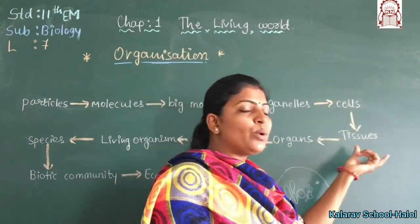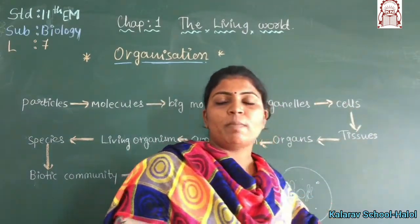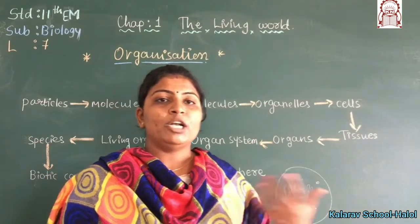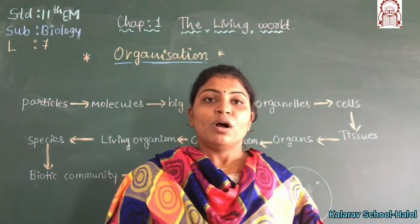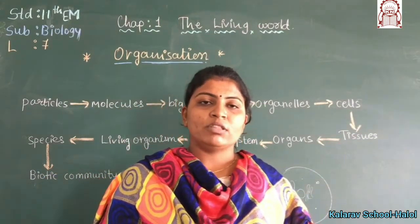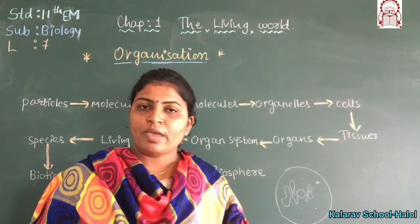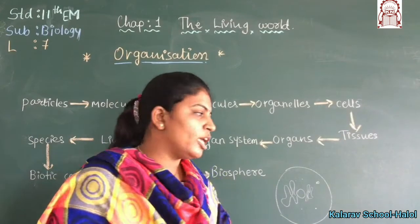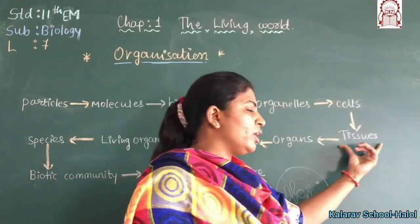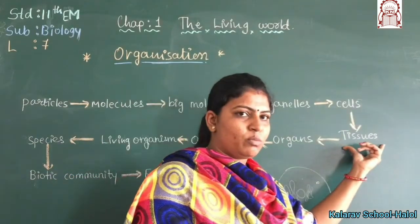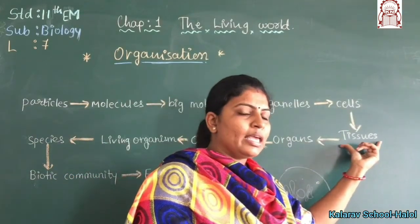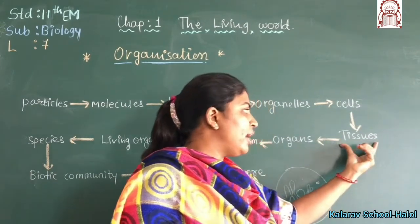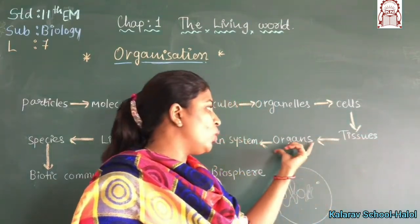So these cells are combined to form animal tissue and plant tissue. Animal tissue has been studied in the 7th chapter and plant tissue has been studied in the 6th chapter. When you study it, you will understand how plants and animals are formed. Tissue is combined to form the next level.